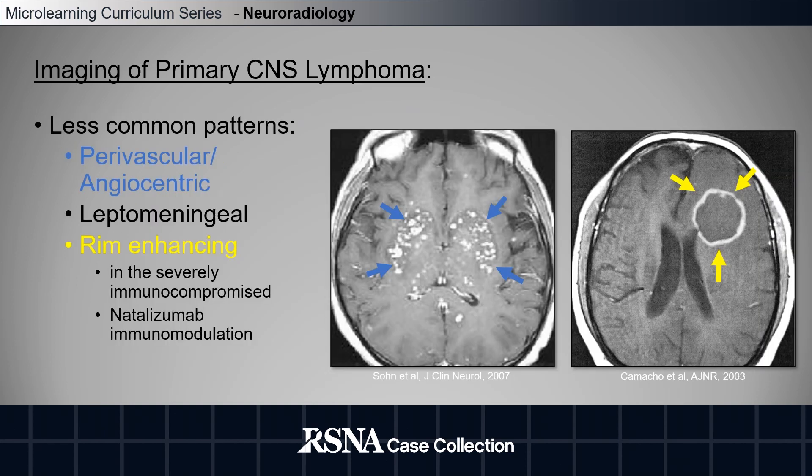Some less common imaging patterns include perivascular angiocentric lymphoma, as seen in this example from the literature, leptomeningeal enhancement, or rim-enhancing masses, as seen in the image on the right. That is more common in the severely immunocompromised and can be seen in the setting of immunotherapy, such as with metalizumab.